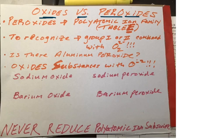Now we know from experience that peroxides are polyatomic ions, and they can be found on Table E in the right column in the middle. Now in order to recognize peroxides, two things must happen: you must have either an element from group one or group two, and it must be combined with the peroxide polyatomic ion O₂ two-minus.